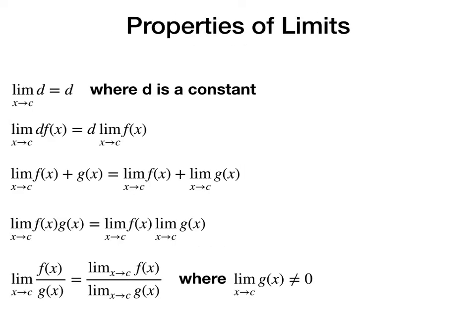Now let's discuss some properties of limits. First, the limit of a constant equals that constant. Second, if you multiply a constant d to a function, you can move d out in front of the limit. Third, the limit of a sum of two functions f of x and g of x can be split into two separate limits. Fourth, the limit of a product equals the limit of f of x times the limit of g of x. Fifth, the limit of a quotient equals the limit of f of x divided by the limit of g of x, provided the limit of g of x at c is not zero.